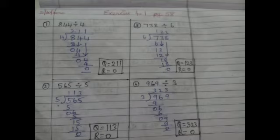844 divided by 4. Here 844 is the dividend and 4 is the divisor. Using the 4 times table, we divide 844. Since 4 is a 1-digit number, we take the first digit 8. How many 4s are in 8? 2 fours are 8; 8 minus 8 is 0. Bring down the next digit 4. How many 4s are in 4? 1 four is 4; 4 minus 4 is 0. Bring down the next digit 4. Again, 1 four is 4; remainder is 0. The quotient is 211 and the remainder is 0.